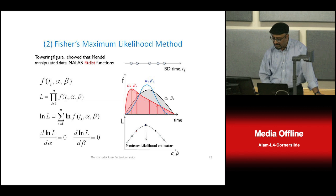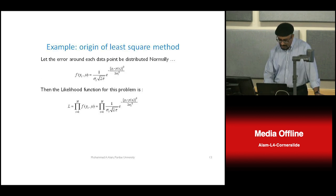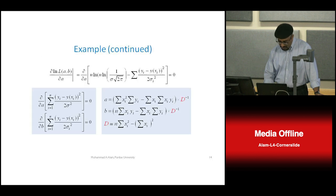A student asked: where does the measured data come into the function f? The function f is the candidate probability distribution — it could be a normal distribution. You are just putting the measured t values into it. You are not subtracting a difference; you are evaluating the distribution at those t values. Let me work out an example and then it will be clearer.